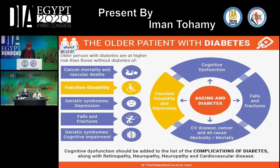Elderly patients with abnormal glucose metabolism are at higher risk of common geriatric syndromes, including frailty, cognitive impairment, dementia, urinary incontinence, traumatic falls and fractures, disability, as well as side effects of polypharmacy, which have an important impact on quality of life and may interfere with anti-diabetic treatment. That's why cognitive dysfunction and common geriatric syndromes can be considered complications of diabetes, alongside retinopathy, nephropathy, and cardiovascular disease.